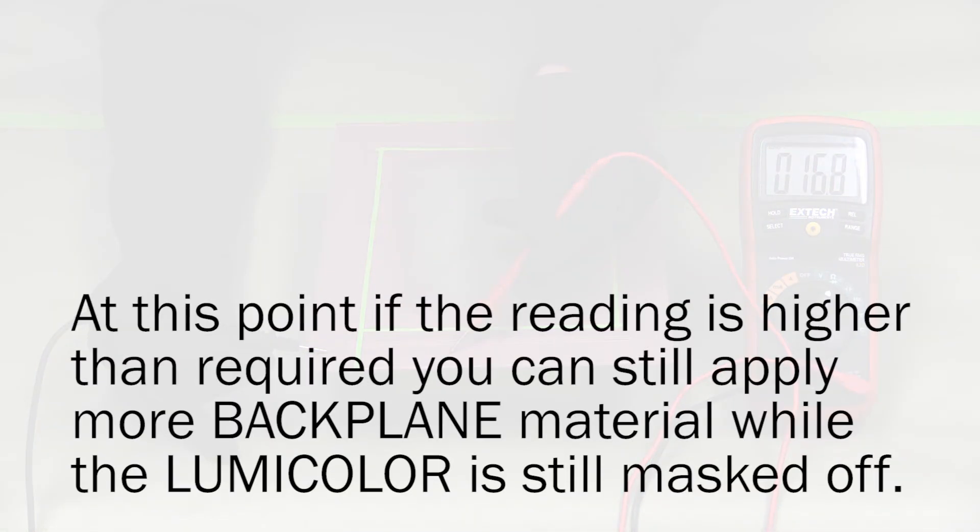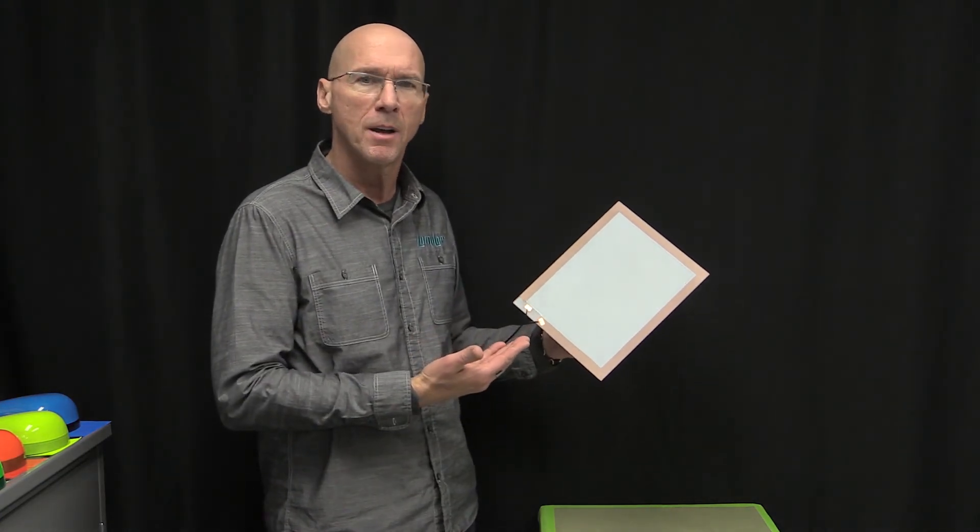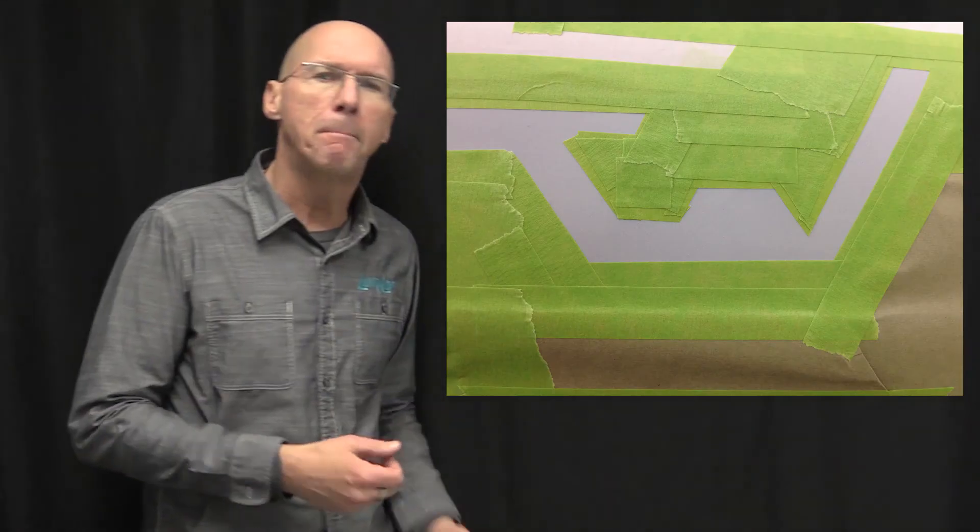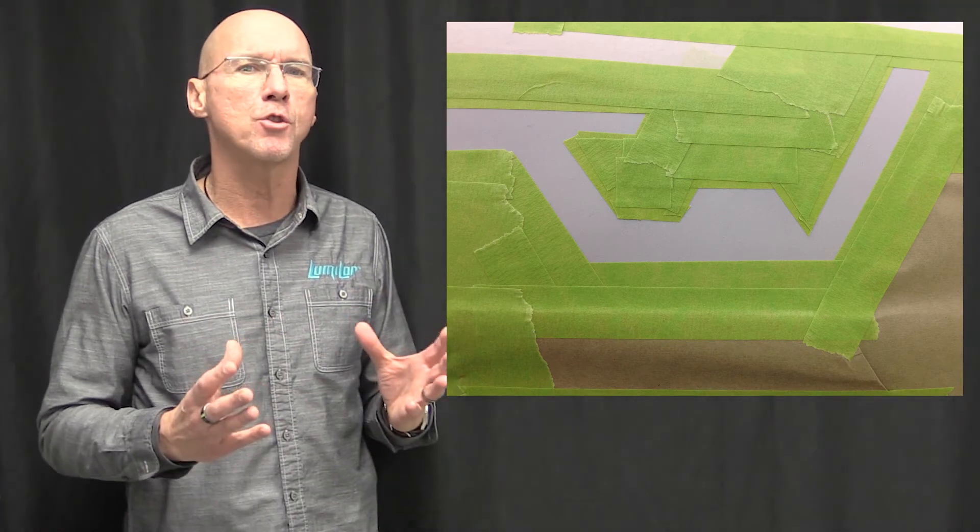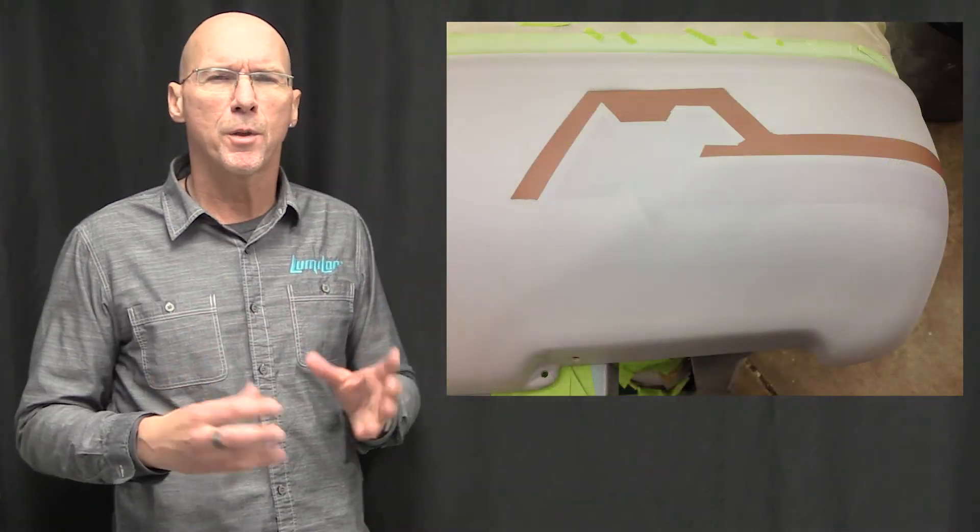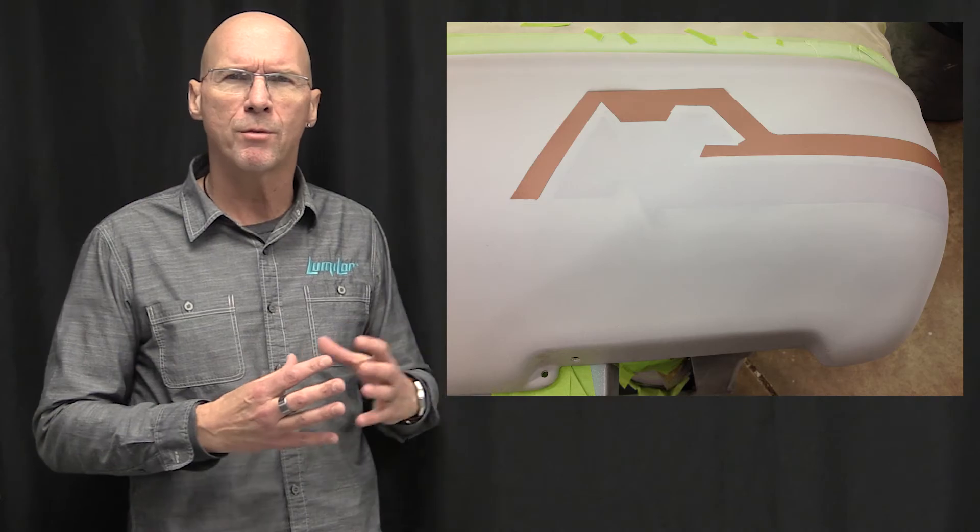At this point, if the reading is higher than required, you can still apply more backplane material while the LumaColor is masked off. Adding the second tape line at the bus bar stage is not a critical step for all fields of light. It is often not required on small or non-complex shapes like this flat panel, but it can become critical on large or more complex shapes where there's detailed masking required for the bus bar.